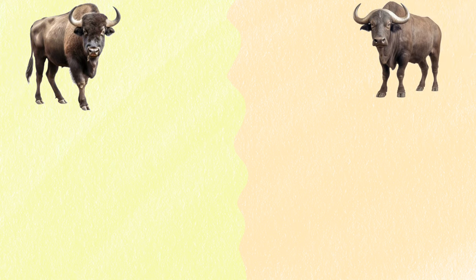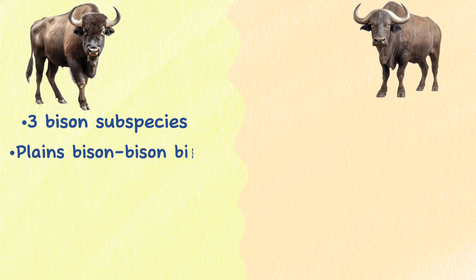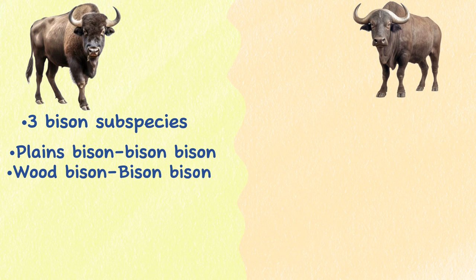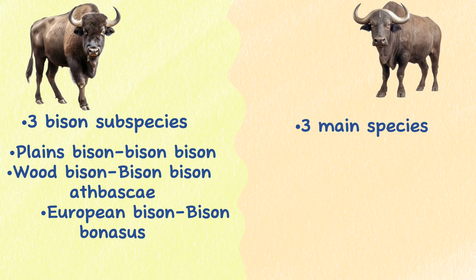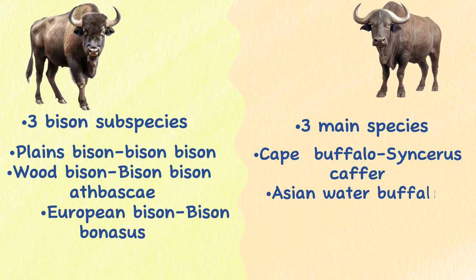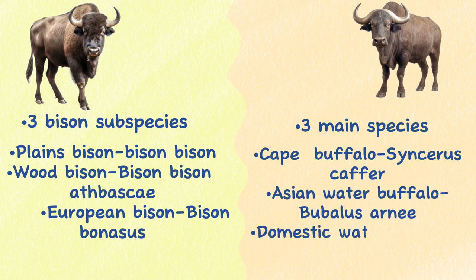Taxonomy. Although they are members of the same family, they are different species. There are three bison subspecies: the plains bison (Bison bison), the wood bison (Bison bison athabascae), and the European bison (Bison bonasus). There are three main species of buffalo: the Cape buffalo (Syncerus caffer), the Asian water buffalo (Bubalus arnee), and the domestic water buffalo (Bubalus bubalis).